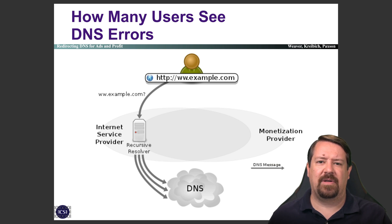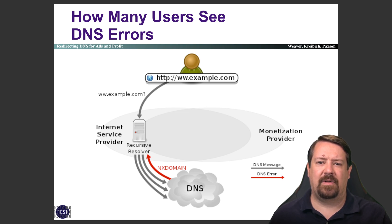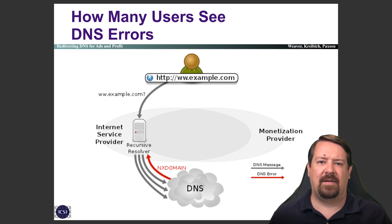Most users by default are using their ISP's recursive resolver to look up DNS queries. Sometimes they may look up a non-existent domain, either because it has expired or because of a typo. In this case, the DNS hierarchy gives back a result called an NX domain — this is a DNS error meaning non-existent domain. The recursive resolver is then supposed to return this NX domain error back to the client so that the browser can display an error to the user saying this domain doesn't exist and suggest they check their spelling or something along those lines.